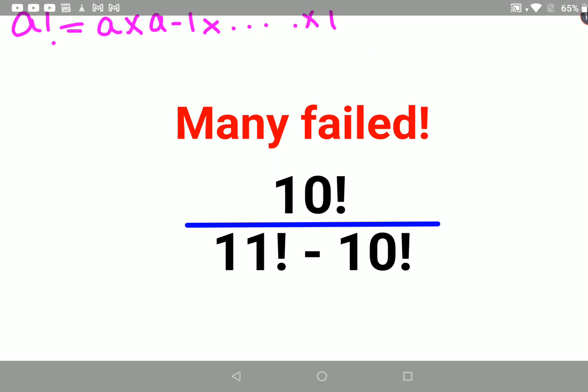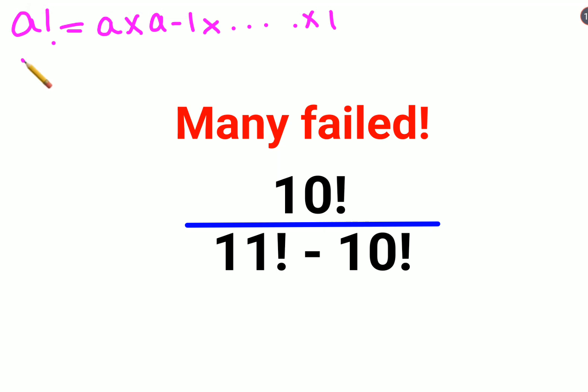So I can say let's say 1 factorial will be 1 into 1 that is 1, 2 factorial will be 2 into 1 which is 2.